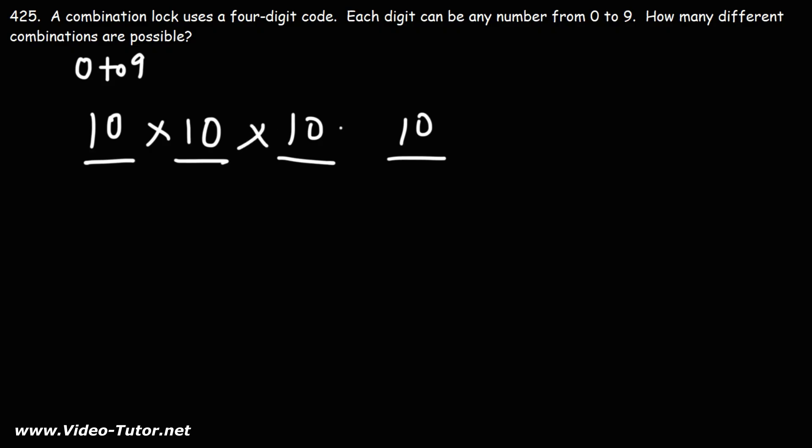So the answer for this problem is simply 10 times 10 times 10 times 10. When you multiply 10 four times, this is 10 to the fourth. 10 to the fourth is 10,000.